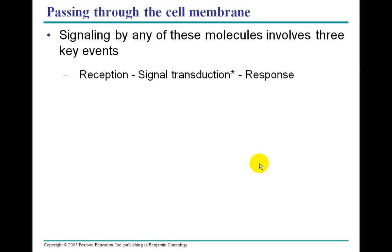You have to remember that signaling for any of these molecules involves three key events. One is reception, the second is signal transduction — transduction is just a movement — and the last is the response. For example, a signal transduction across a cell membrane might involve changing a genetic response, maybe reconfiguring a protein that's being made.